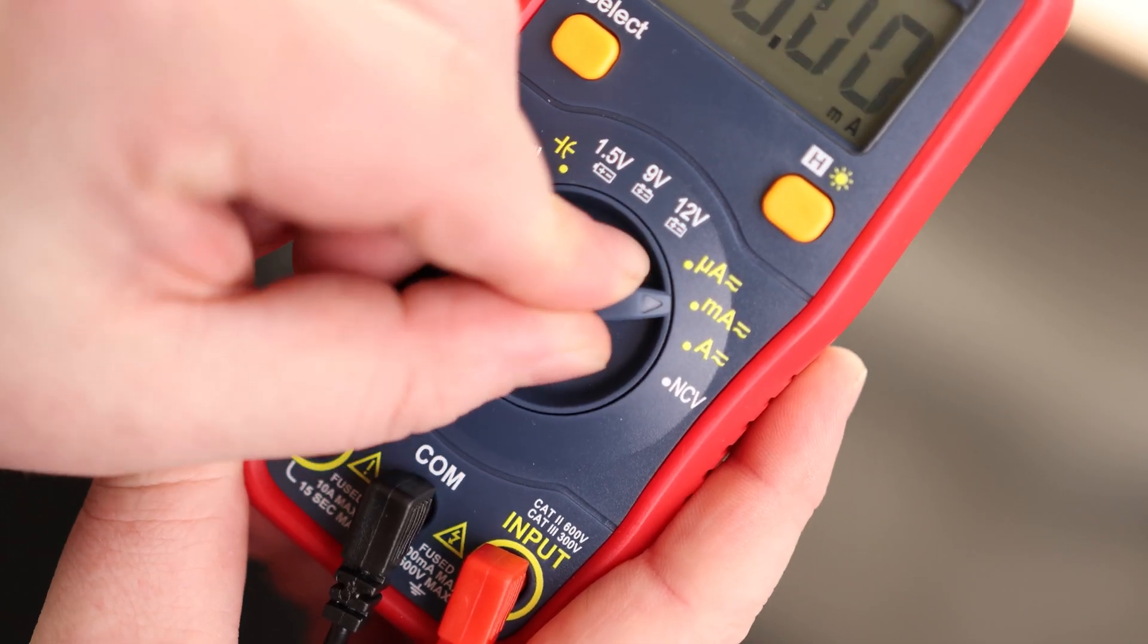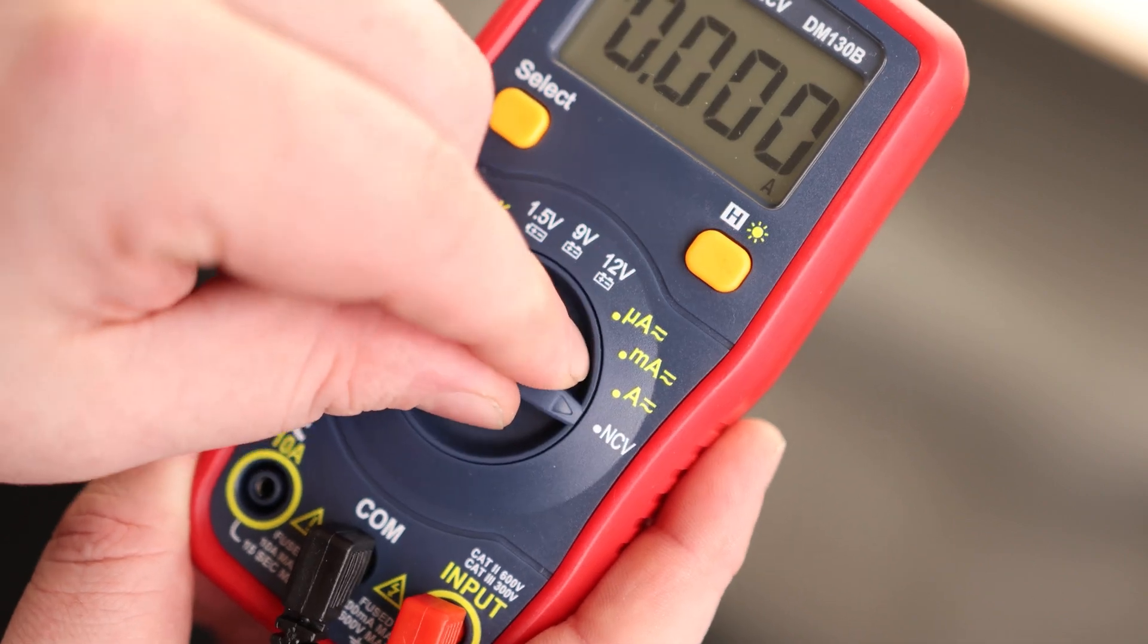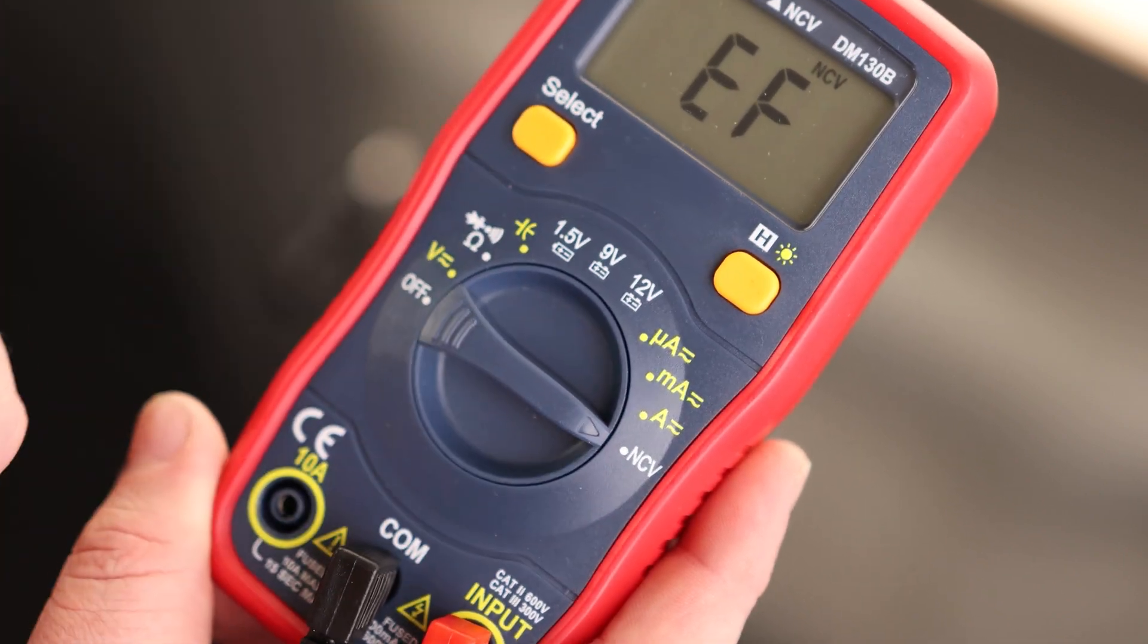Then for amps, we got these three settings. That's how you would check your current. So you just adjust that depending on what range you're going on. And then if we want to check for voltage on a wire, but we don't want to make contact, we can use that.